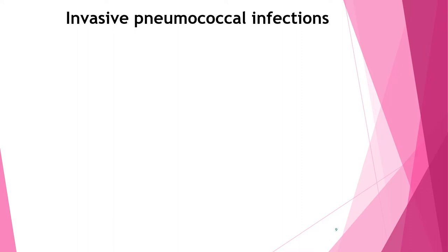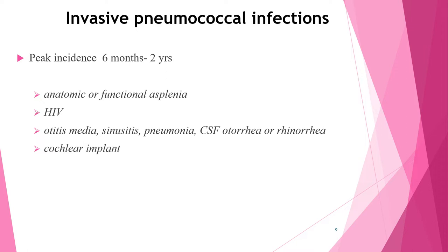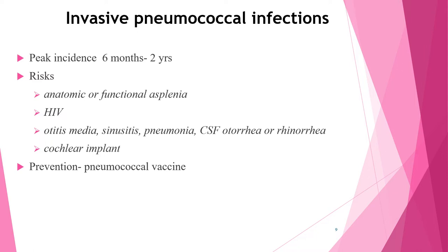Streptococcus pneumoniae is the leading cause of CNS infection in children above two months, with invasive pneumococcal infection peaking between six months to two years of age. Risk factors include anatomic or functional asplenia, HIV infection, otitis media, sinusitis, pneumonia, CSF fistula, and cochlear implants. Unvaccinated children are also at high risk. Prevention includes pneumococcal conjugate vaccines — either 13-valent or 10-valent depending on the country.